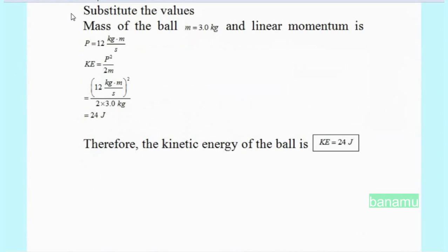Substituting the values: mass of the ball m equals 3 kg and linear momentum is p equals 12 kg·m per second.